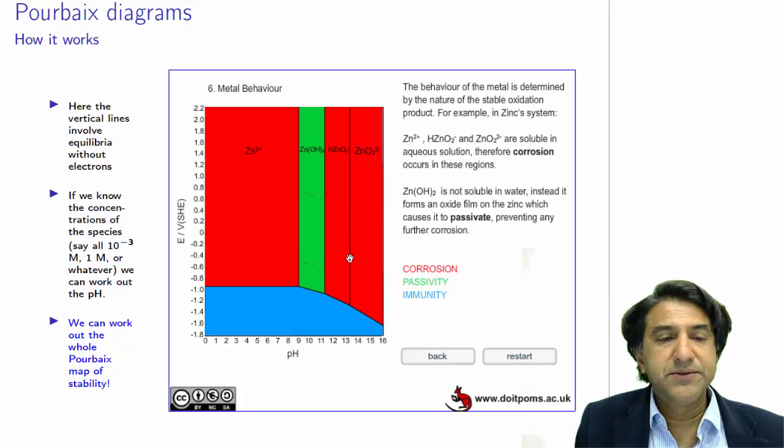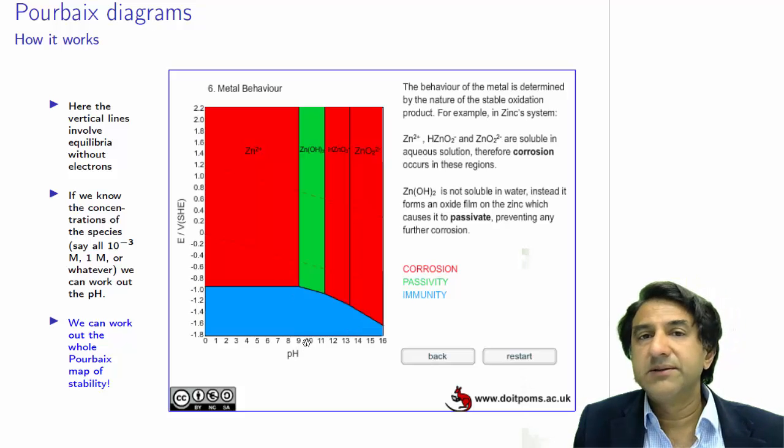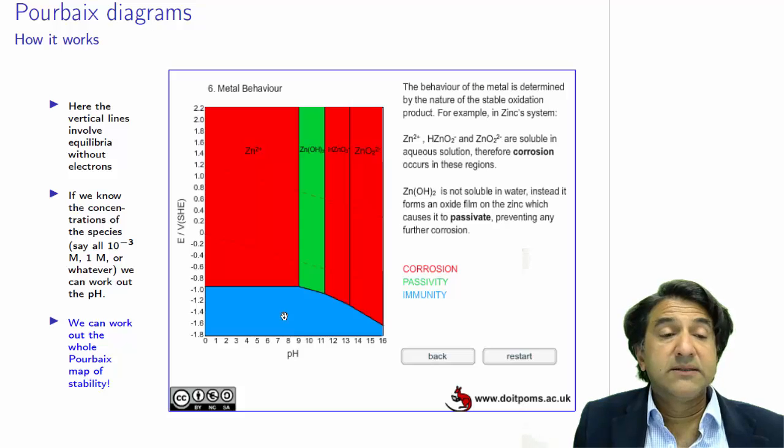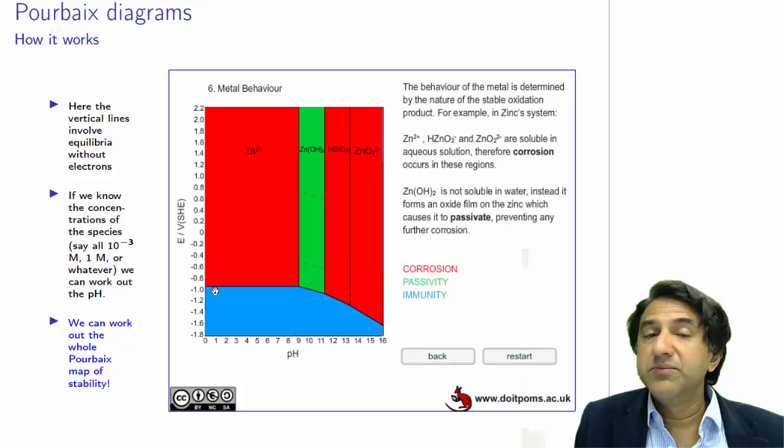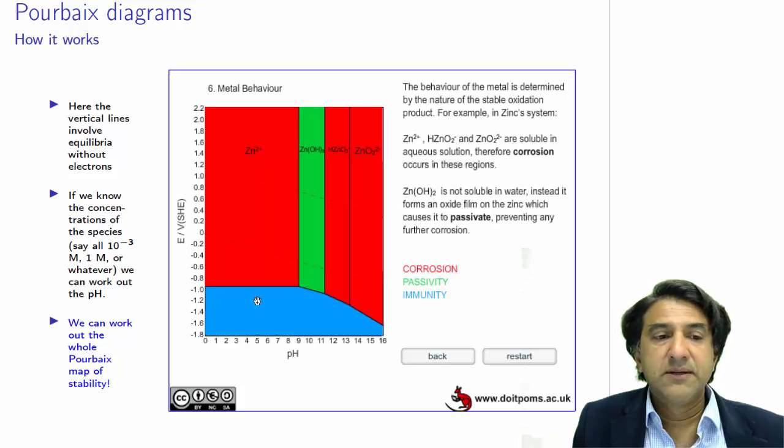The blue region is the part where the metal exists without dissolving, and this is the region of immunity. Unfortunately for zinc, or fortunately, whatever your application may be, the zinc lies outside the region of stability of water, so its immune region, its immunity from corrosion, cannot be achieved in water. I hope you understood that; see you later.